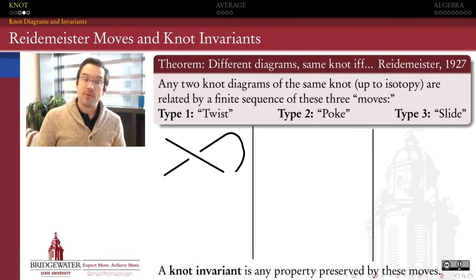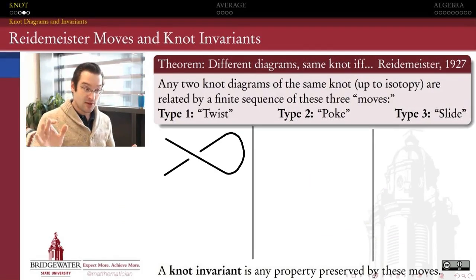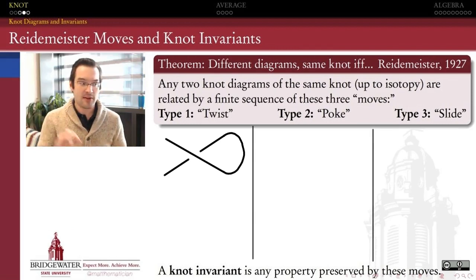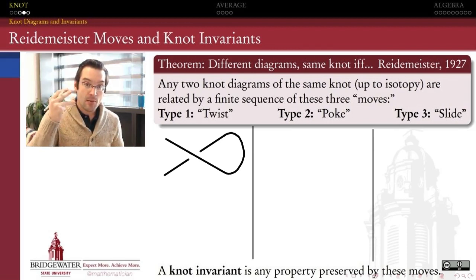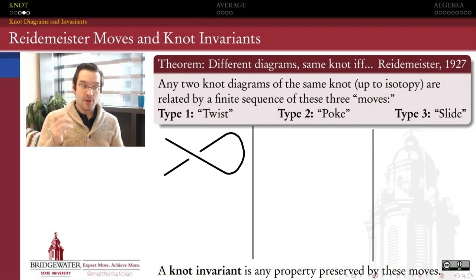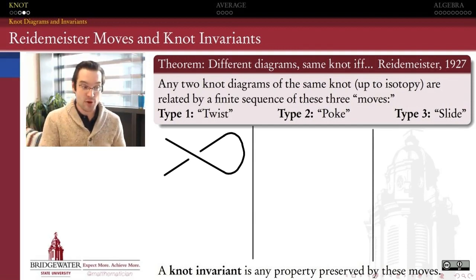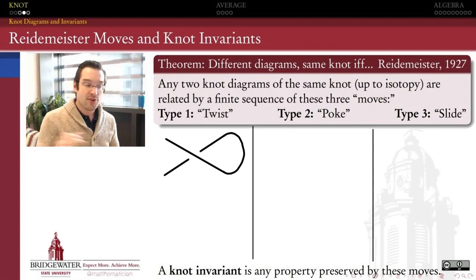Fortunately, it's a problem we can resolve, because it was resolved by Kurt Reidemeister early in the 20th century. This classical result says that any two diagrams of the same knot, up to isotopy, must be related to one another by a finite sequence of only three moves — the Reidemeister moves. Reidemeister called them type 1, type 2, and type 3, based on how many crossings each one engages in the knot diagram.